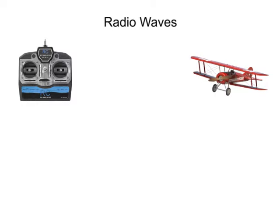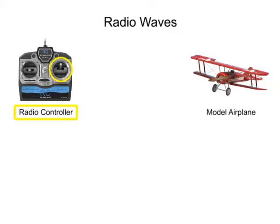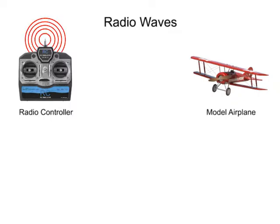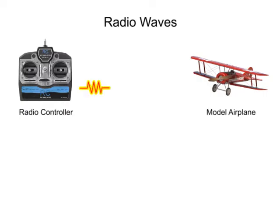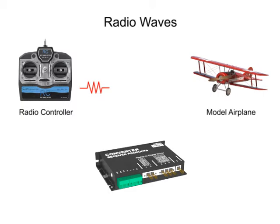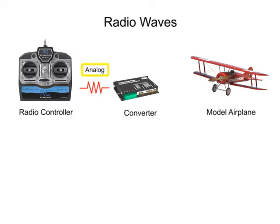The speed and flight pattern of a remote-controlled model airplane are determined by the joystick positions of a radio controller. Based on the position of the joystick, the controller emits radio wave activity at regular time intervals, lasting for a specific length of time. These radio wave pulses are transmitted to a receiver in the plane and converted from analog to digital pulses.